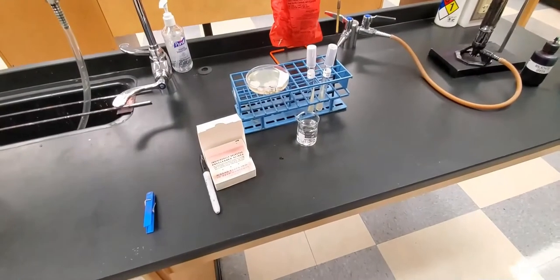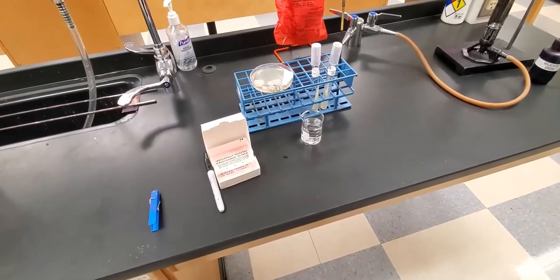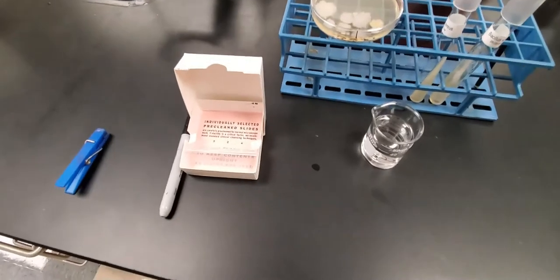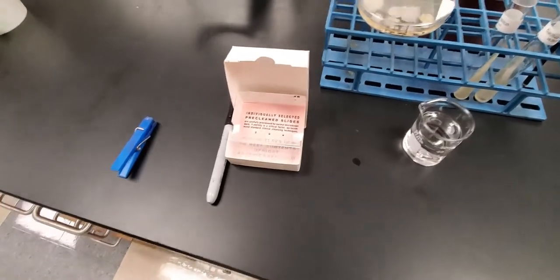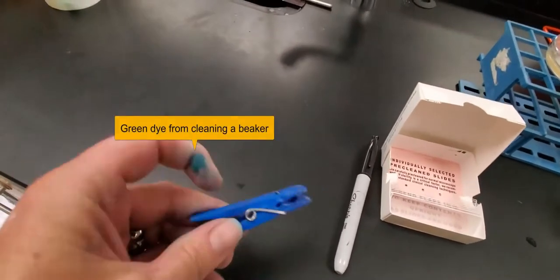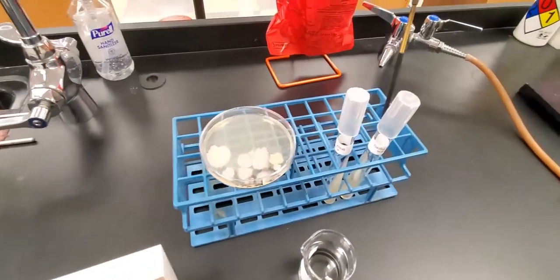In this video we're going to take a look at the endospore stain and we'll need a couple of supplies. As usual we need our glass slides, sharpie to make some labels, your slide retention device, your cultures, and your loop.